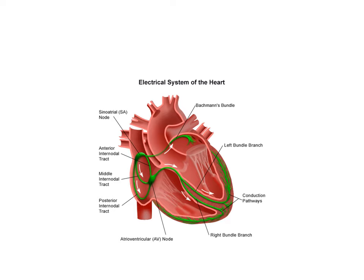This electrical activity is made possible through the conducting system of the heart. The cardiac muscles have a special property called auto-rhythmicity, where 'auto' means automatic. Auto-rhythmicity means that the cardiac muscles are capable of generating their own impulses without the need of any external nervous innervation.